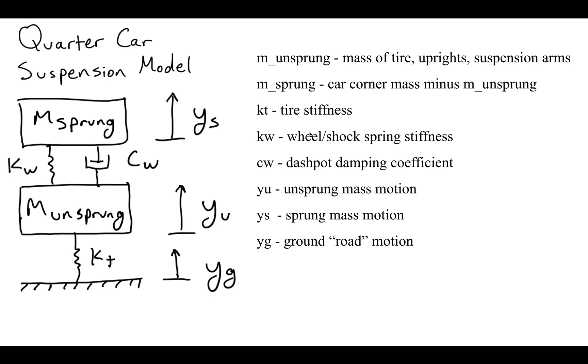Then you have CW, which is the dashpot or the shock absorber coefficient in your system. You have your YU, YS, and YG. Basically what this is going to allow us to do is measure the motion of the system as it's hitting a bump or going over different road conditions. Your YG is the road motion, your YS is the motion of the car itself, and your YU is the motion of your tire, uprights, and the rest of the suspension components.